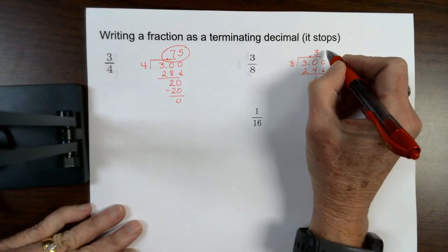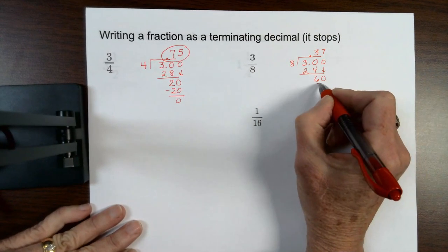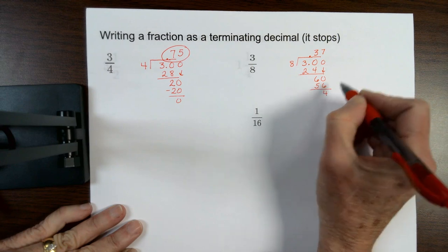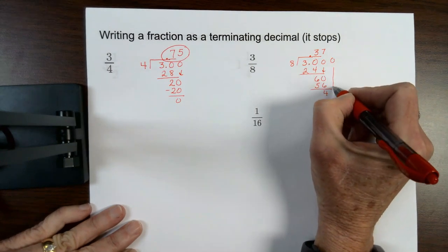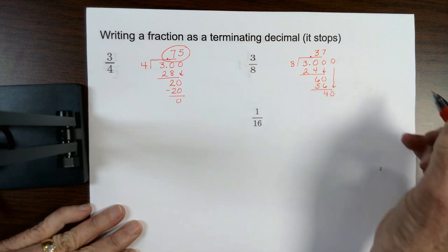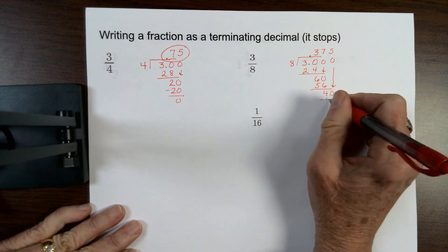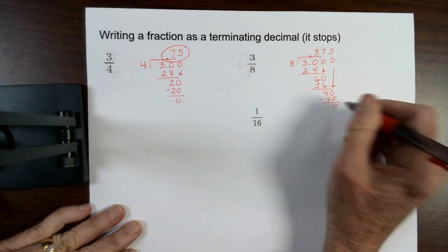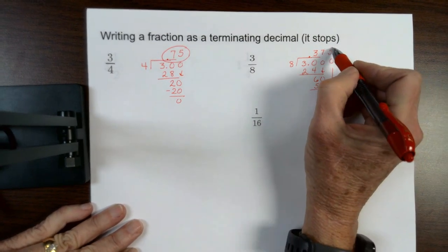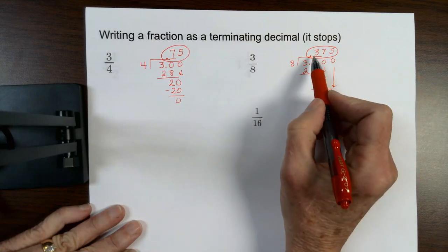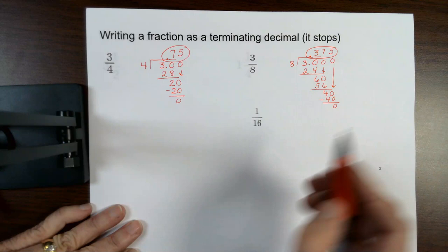Add another 0, bring it down. 8 goes into 60, 7 times. 7 times 8 is 56. Subtract. Add another 0, bring it down until this comes out even. 8 goes into 40, 5 times, and that's where it comes out with no remainder. So the decimal value of 3 eighths is 0.375.